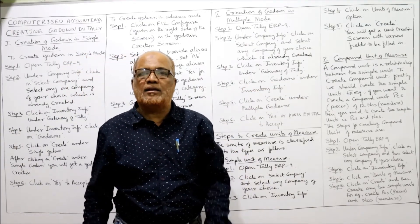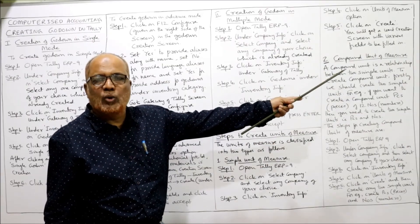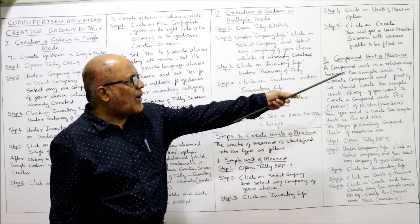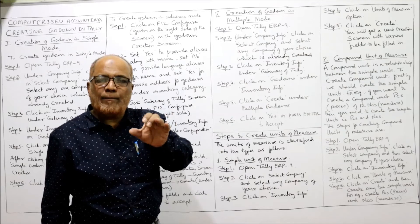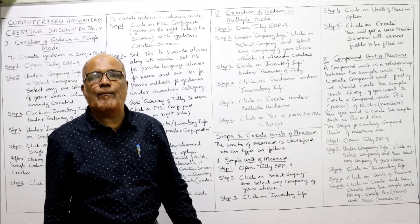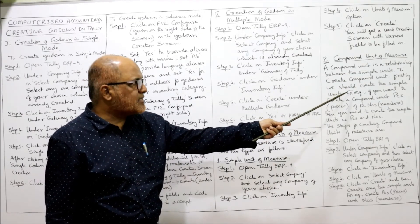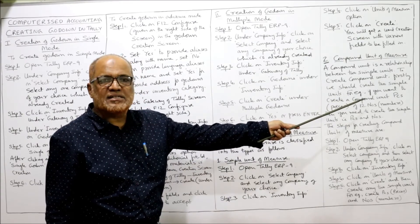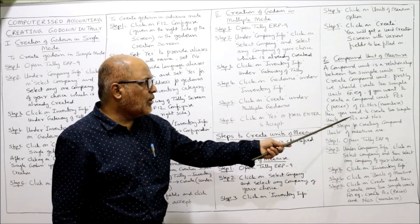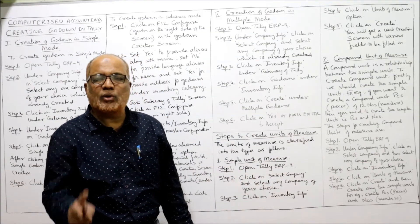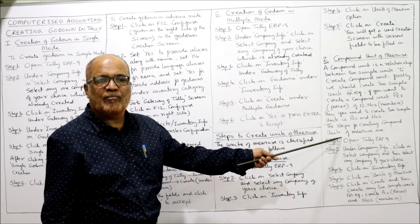Now for the compound unit of measure: compound means combined — two simple units of measure are combined together, and that is called a compound unit of measure. It is a relationship between two simple units. To create a compound unit, we must first create two simple units. For example, if you want to create a compound unit of PCS (pieces) and NOS (numbers), you first need to create PCS and NOS as two separate simple units of measure.